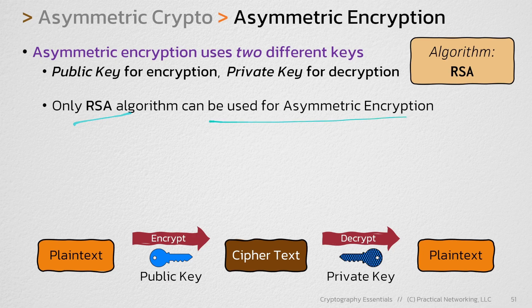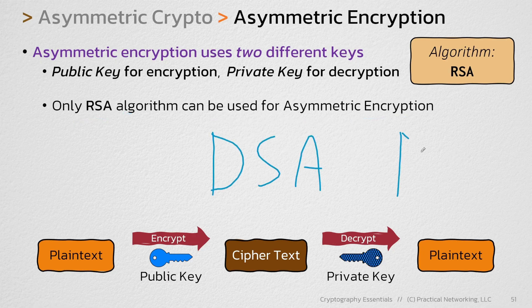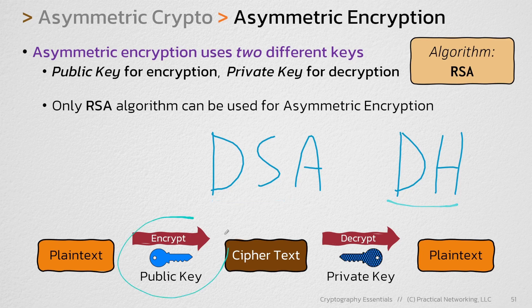That math comes down to the only algorithm you can use to do asymmetric encryption, and that algorithm is RSA. RSA is the only algorithm you can do asymmetric encryption with. The other two asymmetric algorithms, DSA and Diffie-Hellman, are unable to do encryption and decryption. Only RSA is capable of doing encryption.